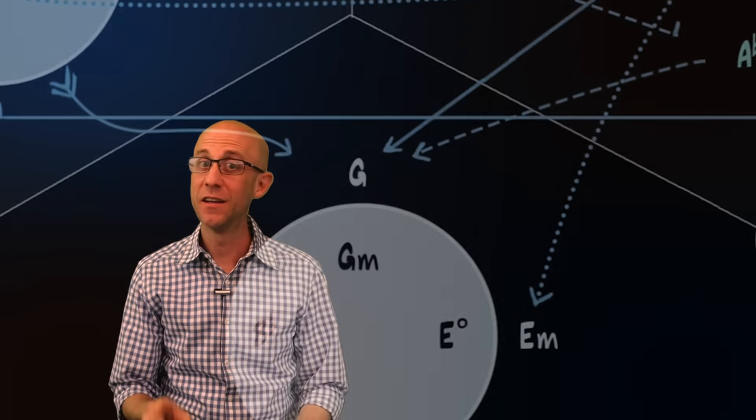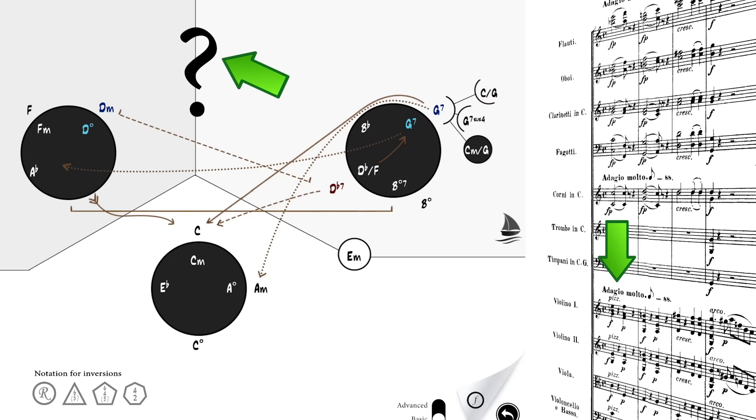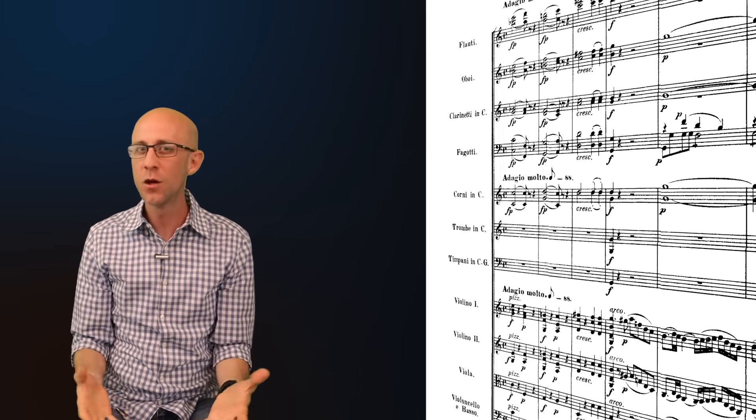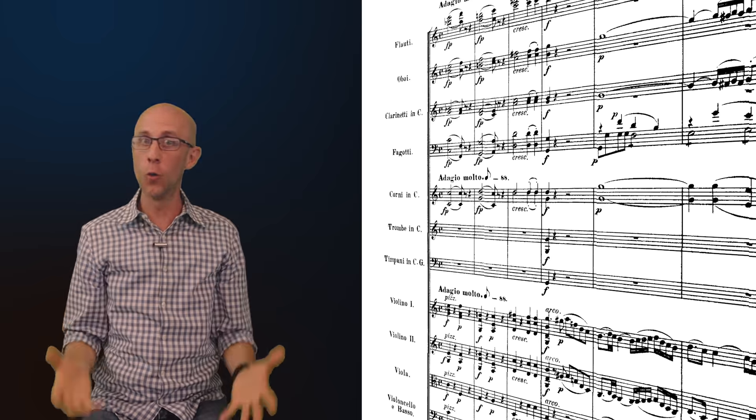Okay, now let's listen to Beethoven's opening from Symphony number one in C major. Whoa, whoa, whoa. Hold on. What did I miss? Did the symphony start already? What key are we in? Was that the tonic? How is this an opening?